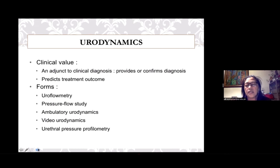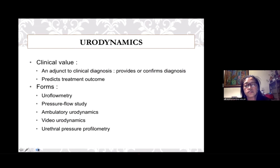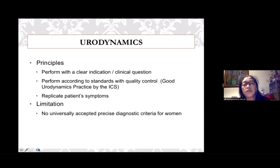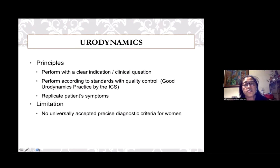There are many forms of urodynamic studies, from simple uroflowmetry to the classic pressure flow study to the more complex forms of ambulatory urodynamics, video urodynamics, and urethral pressure profilometry, each with its own indications. When performing urodynamics, one should adhere to the principles that the study be performed with a clear indication and a clear clinical question, replicating patient symptoms according to standards with good quality control. I encourage all trainees to read the Good Urodynamic Practices document of the International Continence Society.